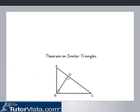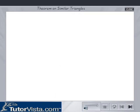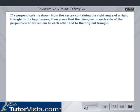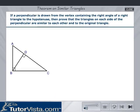Theorem: If a perpendicular is drawn from the vertex containing the right angle of a right triangle to the hypotenuse, then prove that the triangles on each side of the perpendicular are similar to each other and to the original triangle.